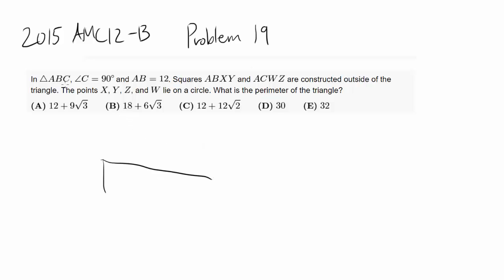So let's start by drawing this right away. If I can draw it correctly. So ABC and C is 90 degrees.